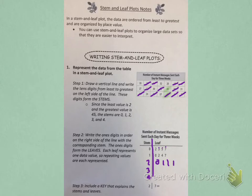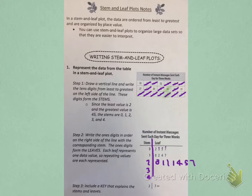Now let's look for the next greatest number that starts with two. That's twenty-four, so we're going to write a four here. And then I see a twenty-five, so we'll have a five. And then I see twenty-seven, so we need to put a seven. And I see another twenty-seven, so we put another seven.